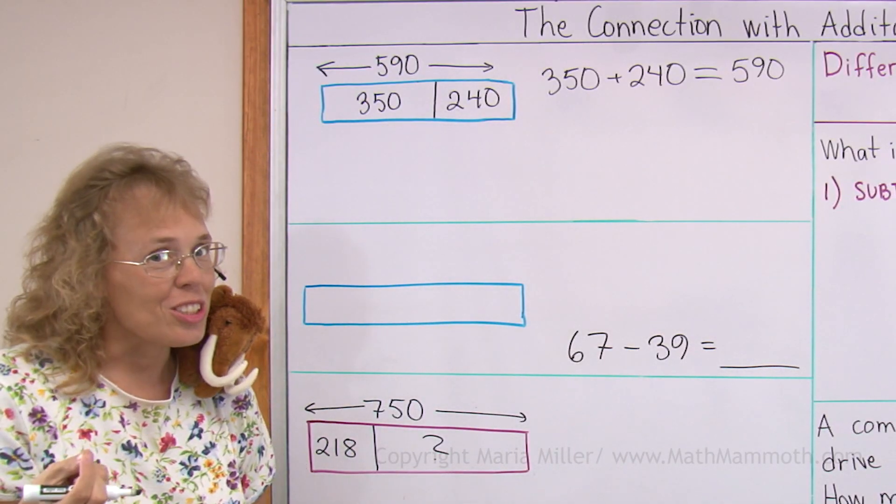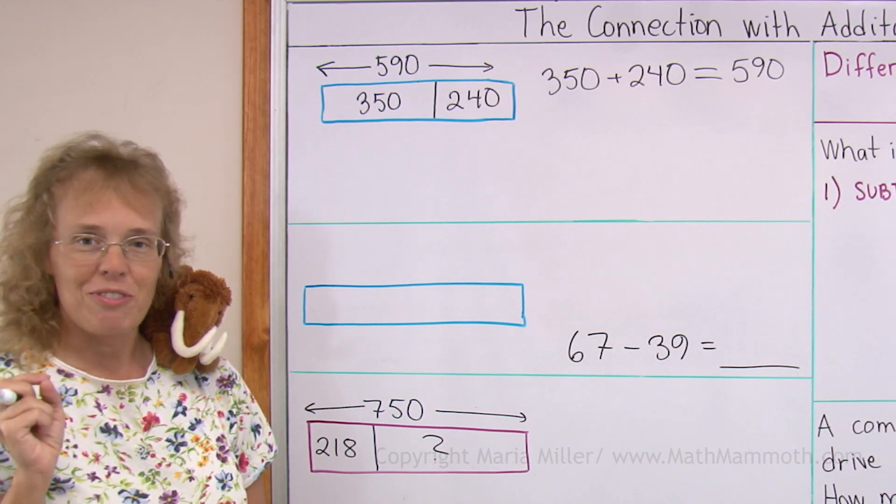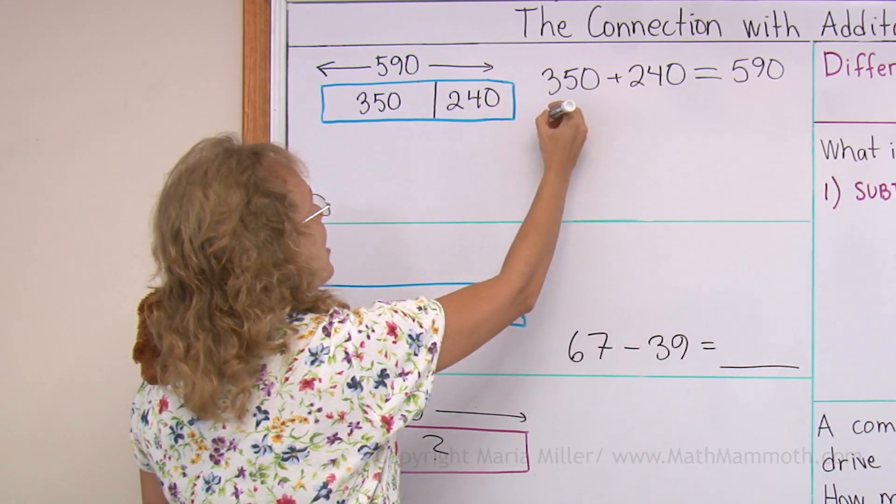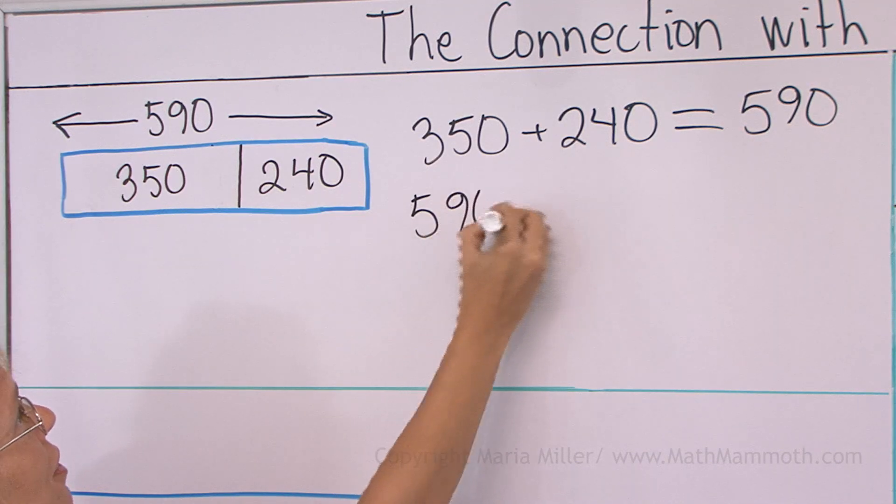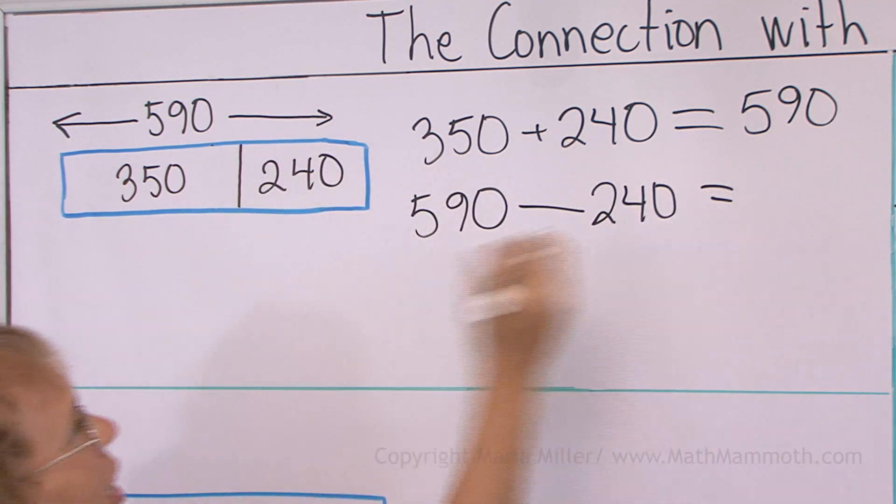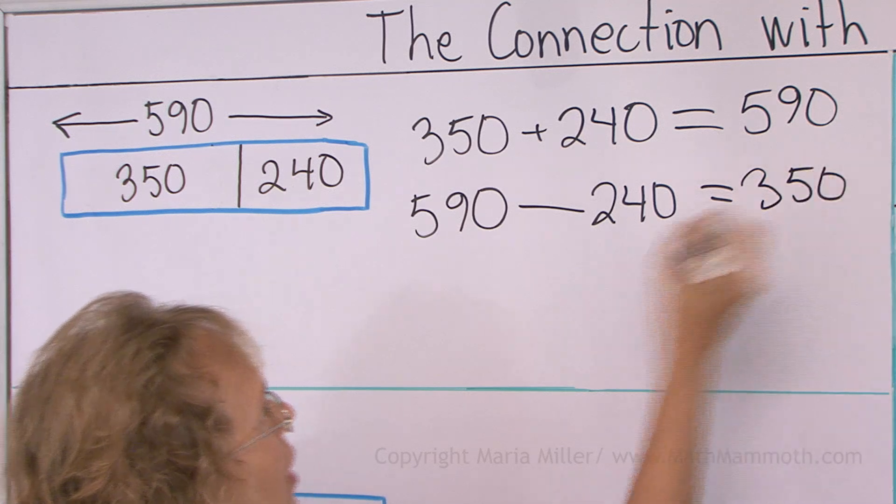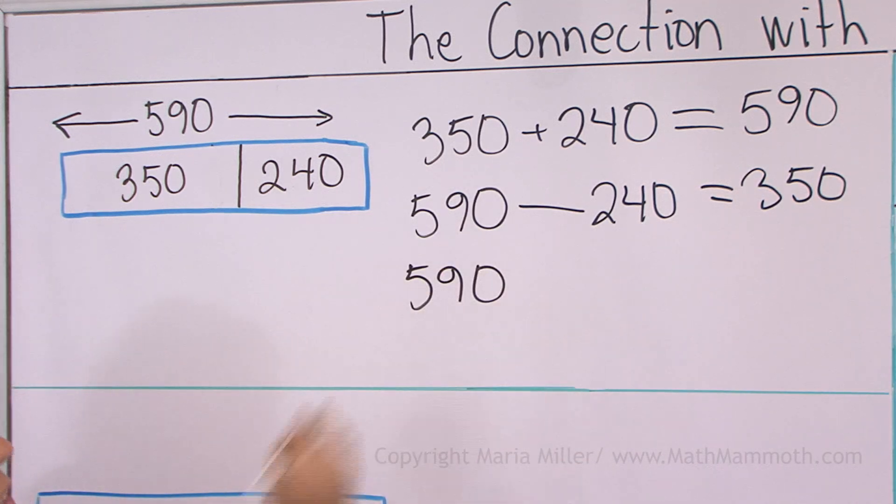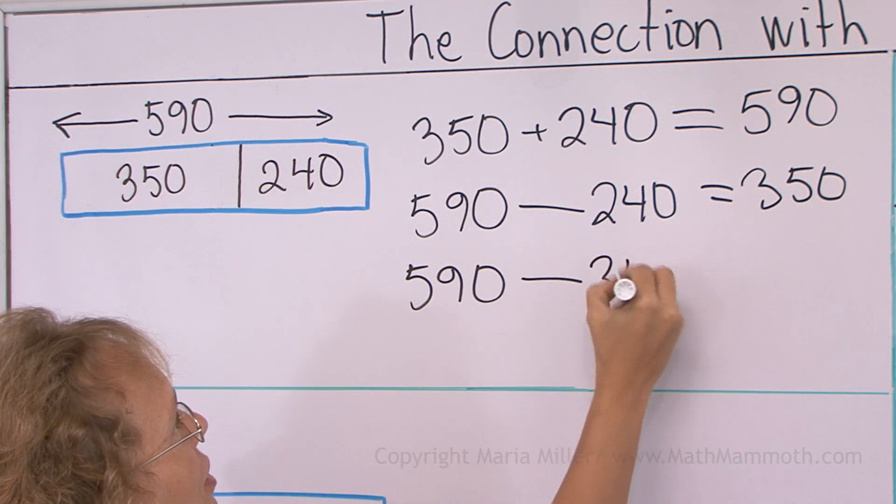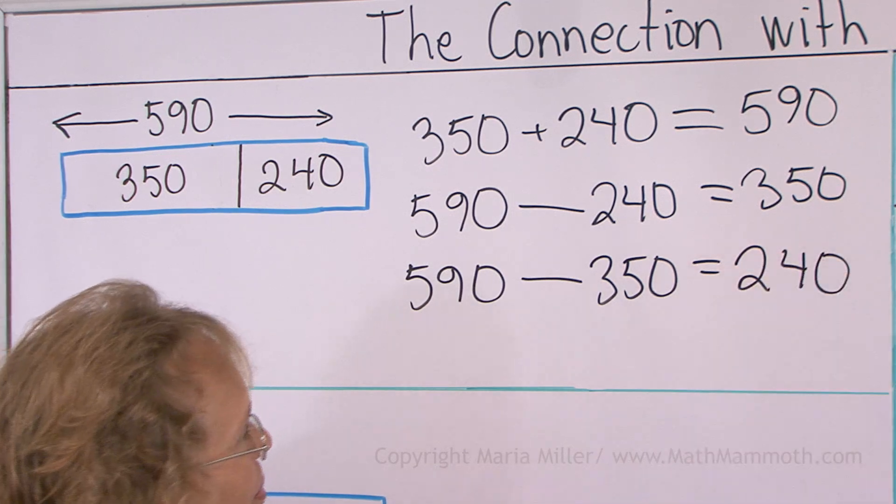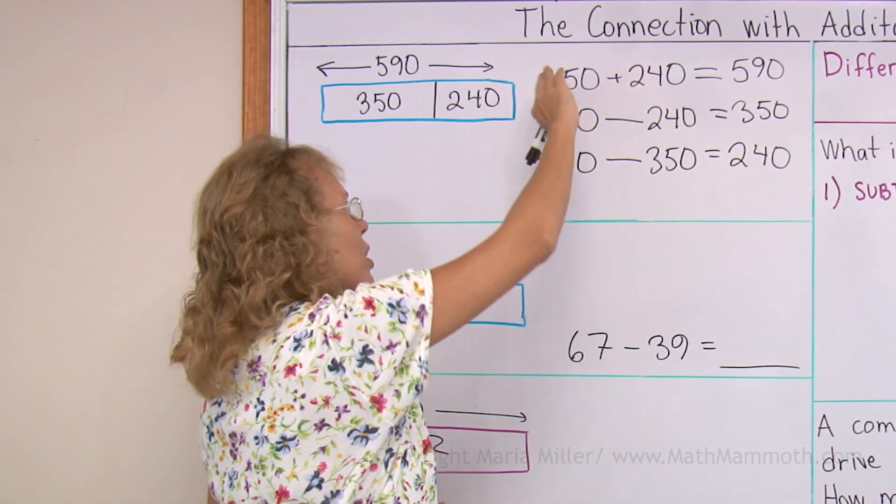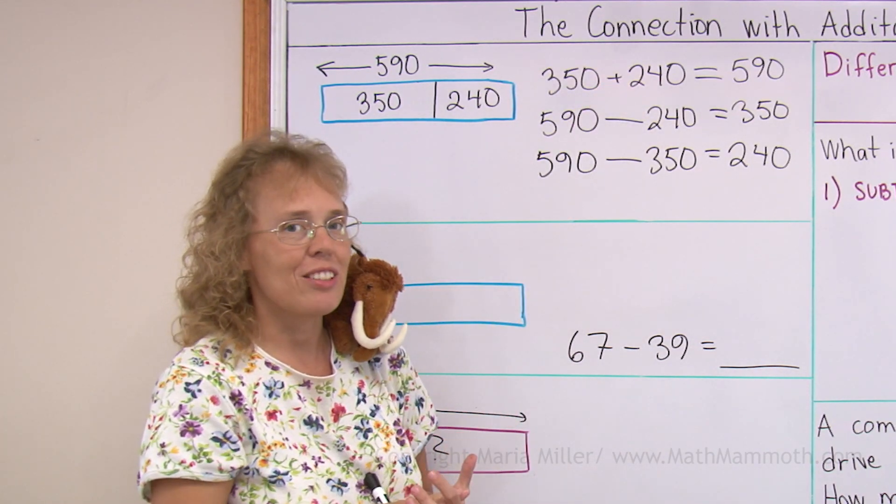And then we're going to write two subtractions from this. Remember fact families? This is the same idea. I start with the total. If from the total I take away this part, then I have this much left. Or if from the total I subtract or take away this part, 350, then I have 240 left. And then of course there would be another addition if you switch these numbers: 240 plus 350 equals 590.